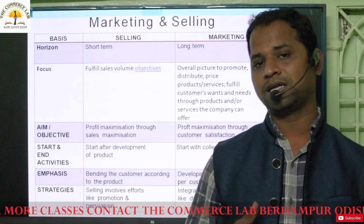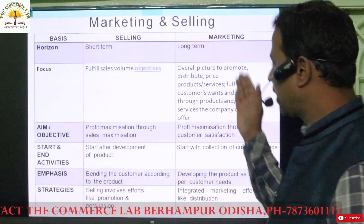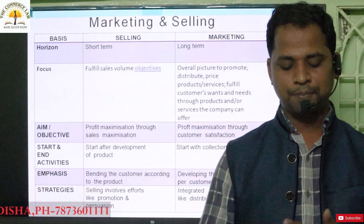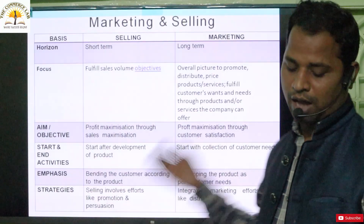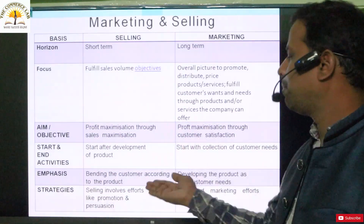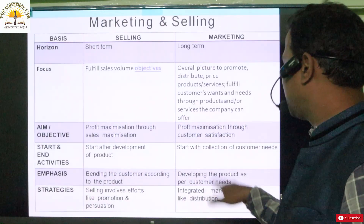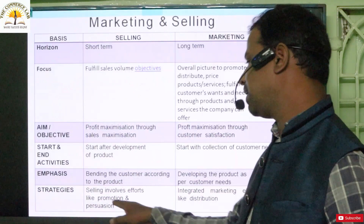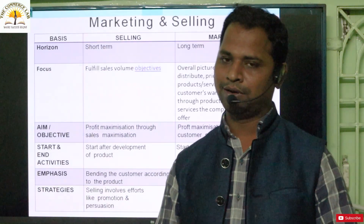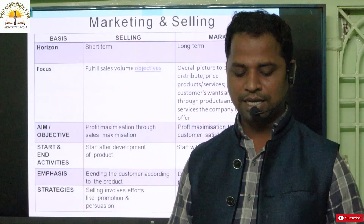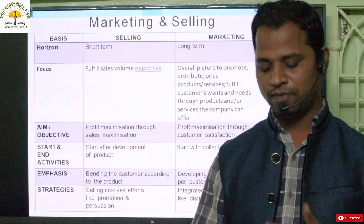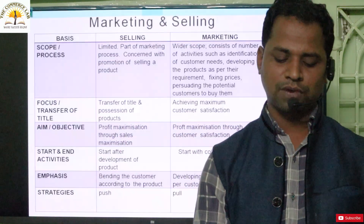In terms of time horizon: selling is short-term, while marketing is long-term. In terms of focus on volume: selling focuses on fulfilling sales volume objectives — how to increase the quantity sold. Marketing focuses on promoting the product, distributing it, and understanding the wants and needs of the customer through products and services. In terms of aim and objective: profit maximization in selling is through sales maximization, while in marketing it is through customer satisfaction. Selling uses push-type promotion and persuasion strategies, while marketing uses integrated marketing efforts like distribution through wholesalers and retailers.